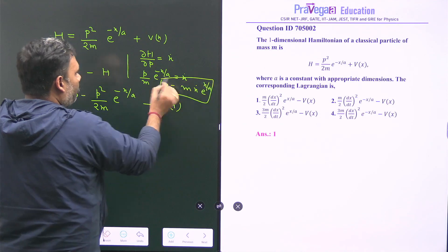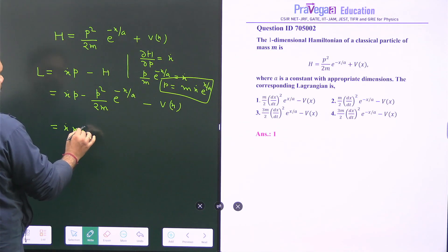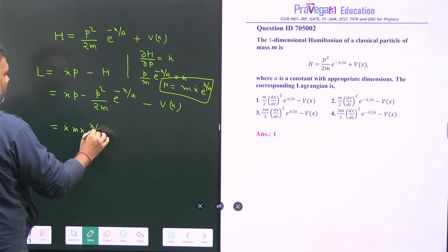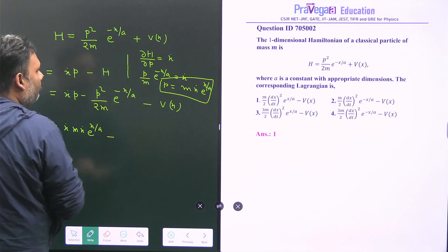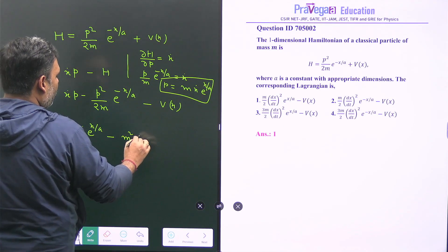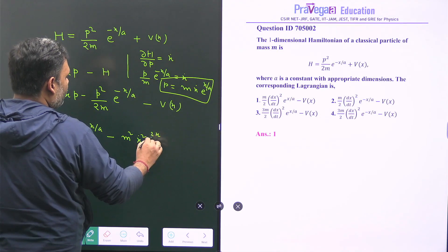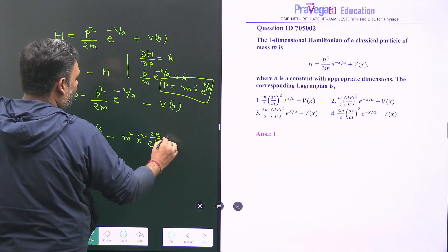So once we put this value of p here, then we can get x dot m x dot e to the power x upon a minus here we have to go for p square. So we have m square x dot square e to the power 2x by a e to the power minus x upon a by 2m minus v(x).